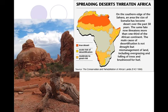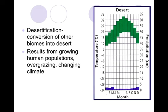Spreading deserts can threaten certain areas. For example in Africa, we have our true deserts shown in orange, and then areas at moderate risk of what we call desertification — where we end up making these areas desert-like. That happens as a result of growing human populations: overgrazing by animals and basically changing the climate in that area, causing biomes to become deserts. If you look at the climograph of the desert, you'll see a temperature range — it's not just hot — but look at the precipitation: it's very, very low, and that's what classifies a desert.